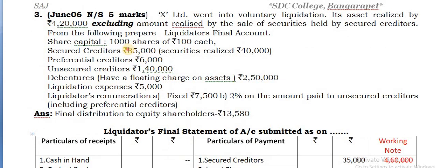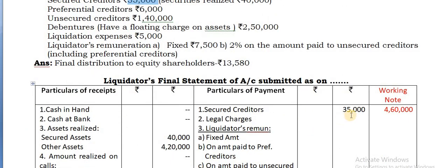But the claim is only 35,000. Our claim amount or the asset realized - whichever is less, always that is how it is being taken. So, it is 35,000.